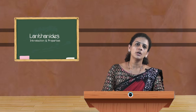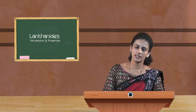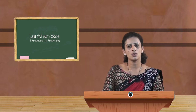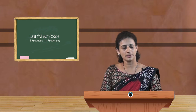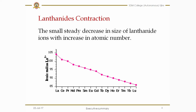What about the oxidation state? The most common and principal oxidation state of lanthanides is +3. However, some elements exhibit +2, +4, and +5 oxidation states to attain extra stability by acquiring exactly half-filled or completely filled electronic configurations.